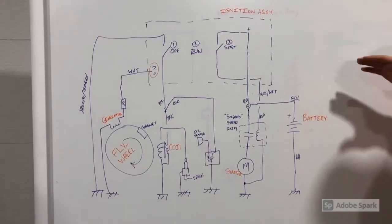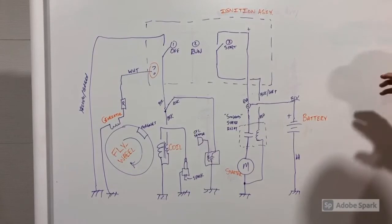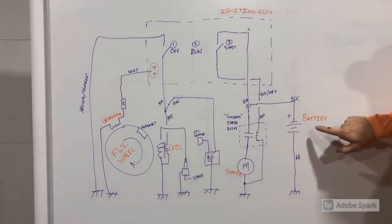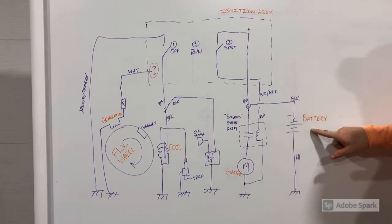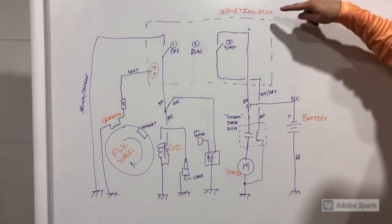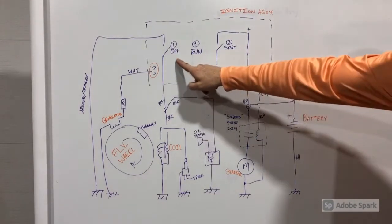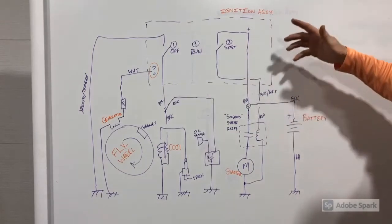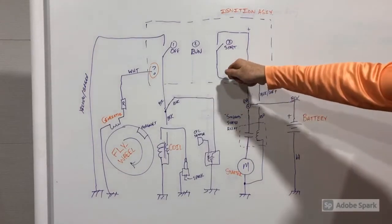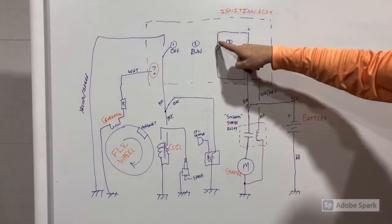All right, so now I want to walk through basically how this whole diagram works. So the most important part is your power source. In this case, it's a battery represented by this symbol, and that's a 12-volt marine battery. And up here, you have your ignition assembly. So you have an off, a run, and a start position. So the way this starts is you literally put the key in, turn it to the start position, and you close the circuit.